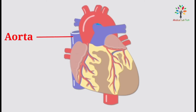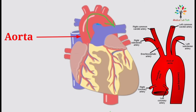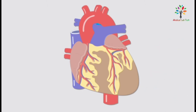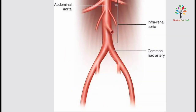The aorta begins at the upper part of the left ventricle, then it passes slightly upward and arches backward and to the left. The aorta then descends behind the heart through the thoracic cavity, a little to the left of the thoracic vertebra, and it reaches the abdominal cavity. From the abdominal cavity, the aorta divides into two parts: the right and left common iliac arteries.